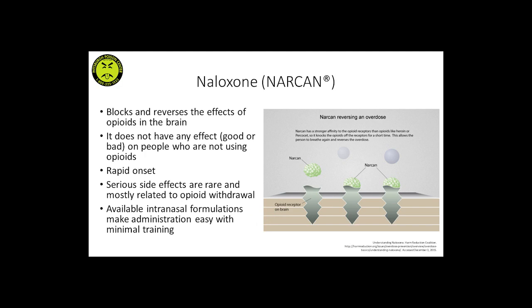A little bit of pharmacology of Naloxone: basically Narcan blocks and reverses the effects of opioids in the brain. You'll see these opioid receptors here in the brain — here are opioids, pretend this is what an opioid molecule looks like. Whenever you take it, it comes in and binds to those receptors, and that's what causes all of the things that opioids can do. Narcan, however — these green bubbles here — has a higher affinity to those receptors. So it's going to come in, bump the opioid off of the receptor, and block that opioid from being there.